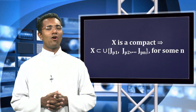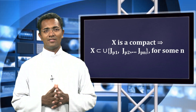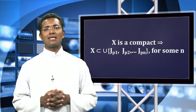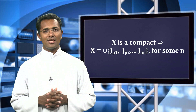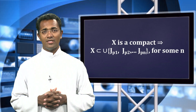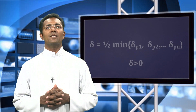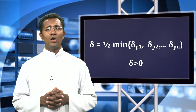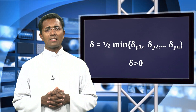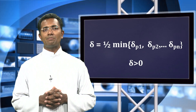Since X is a compact metric space, we see that for some finite n, J_{p1}, J_{p2}, up to J_{pn} can cover X. Now we find delta in a particular manner by taking delta as half of the minimum of delta_{p1}, delta_{p2}, up to delta_{pn}.